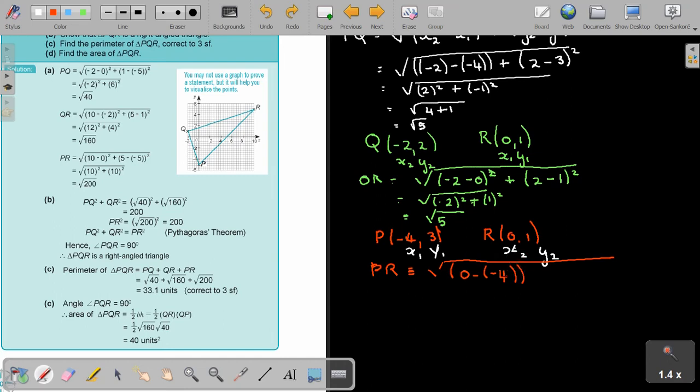So X2, and don't forget to square it, plus, Y2. So it's 1 minus 3 and square it. And then my answer will be, it's just an equal sign.